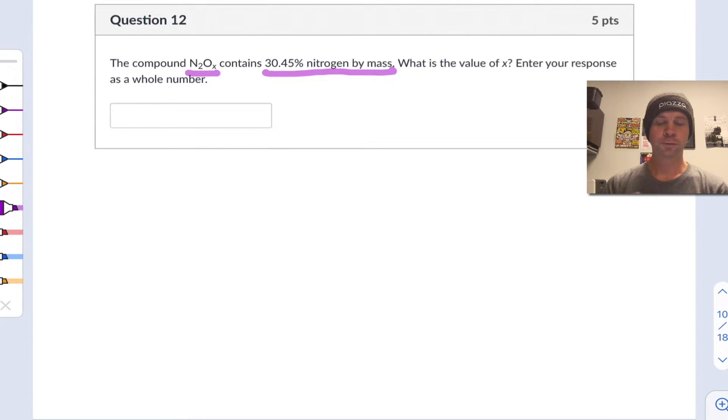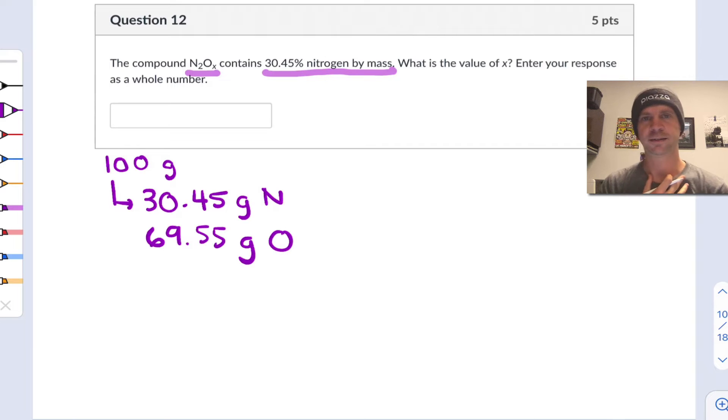Alright, so to begin, I would start with the mass percentage and think about this as a mass out of 100 grams of the compound. So let's imagine that we had 100 grams of this mystery compound. Given the information in the problem, we can conclude that this 100 grams contains 30.45 grams of nitrogen atoms and the remainder oxygen atoms, 69.55 grams of oxygen atoms in this compound.